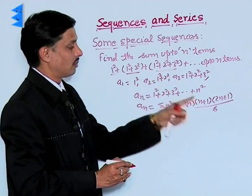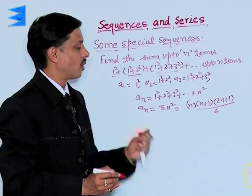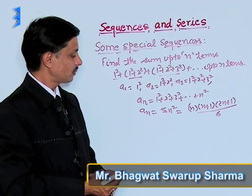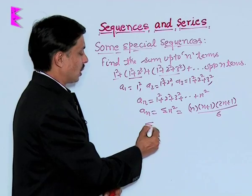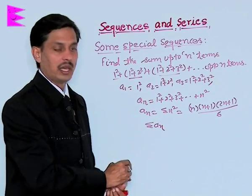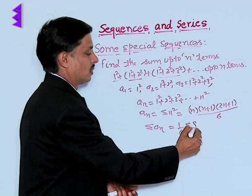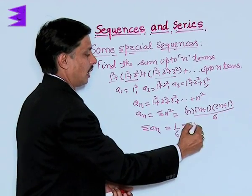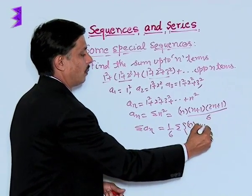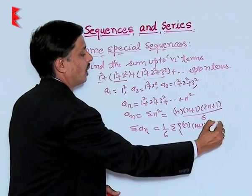This will be the nth term of this series whose sum of n terms is required. As usual, we put sigma on a_n. So this becomes 1 upon 6 times sigma of n into n plus 1 into 2n plus 1.